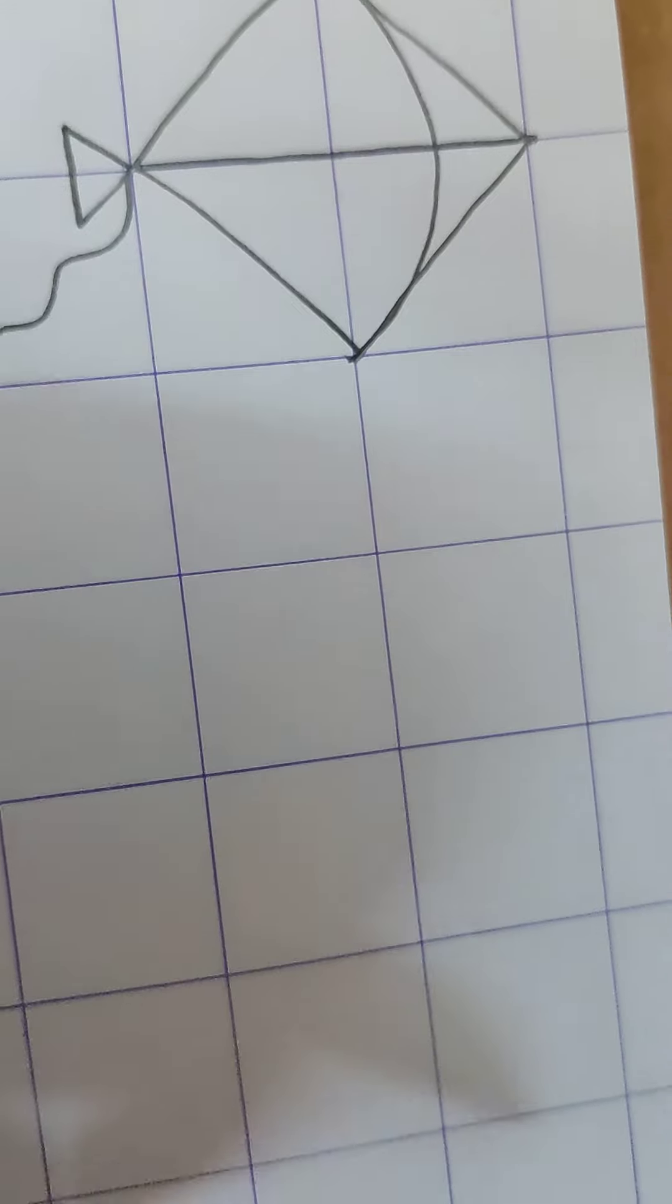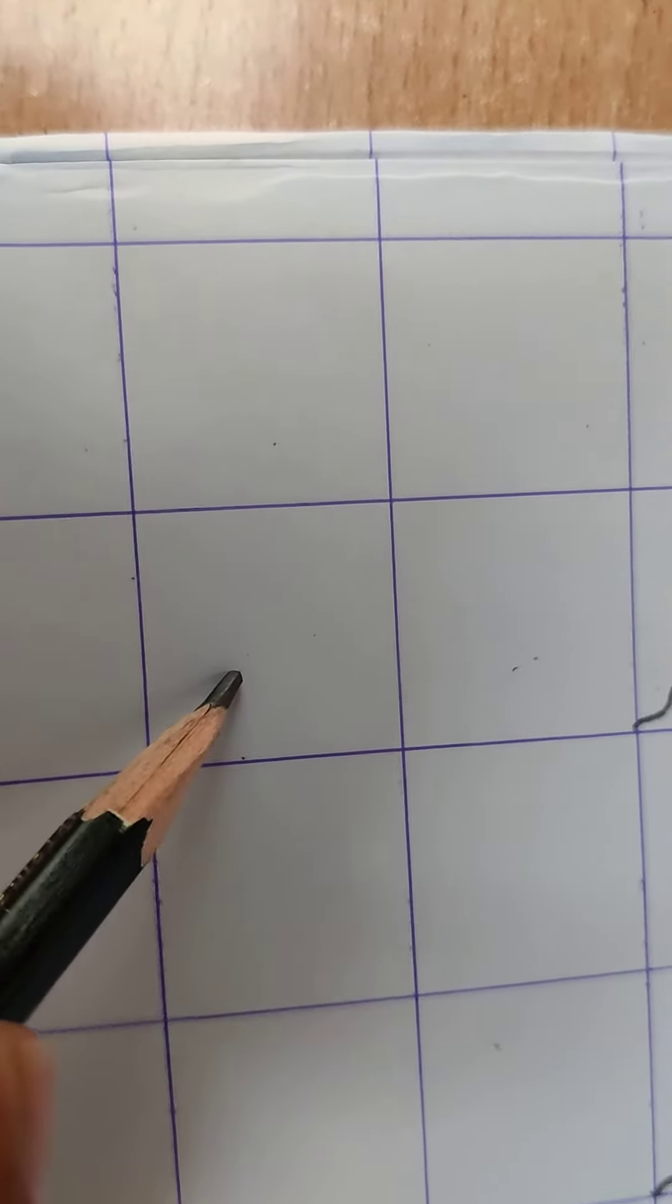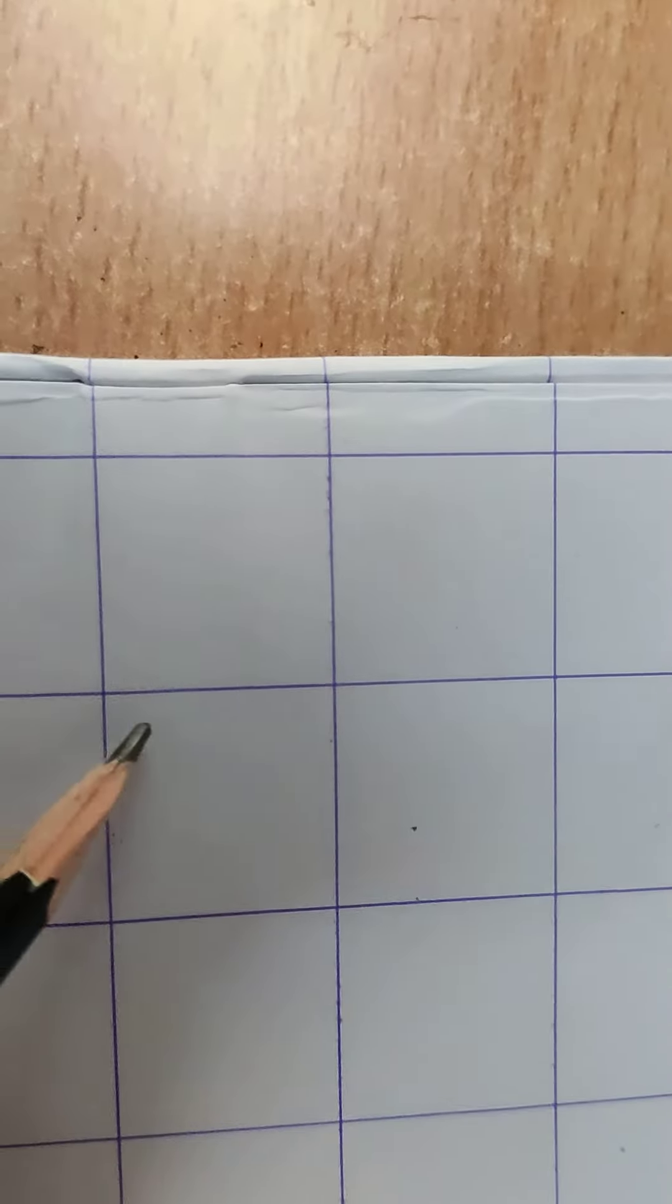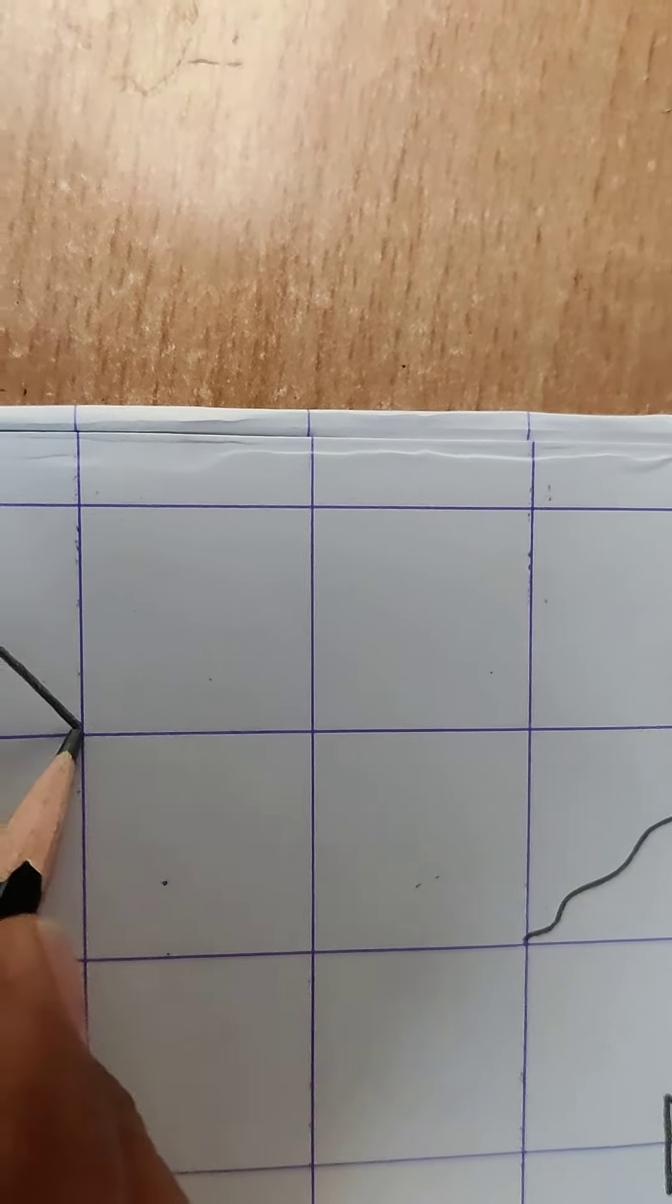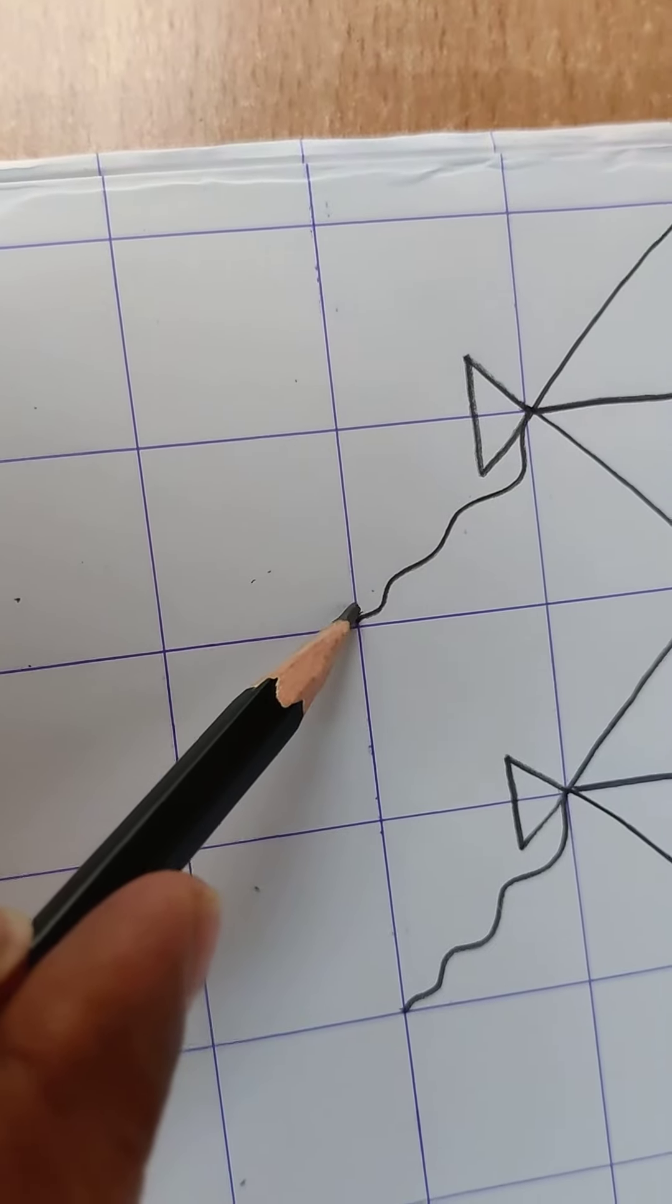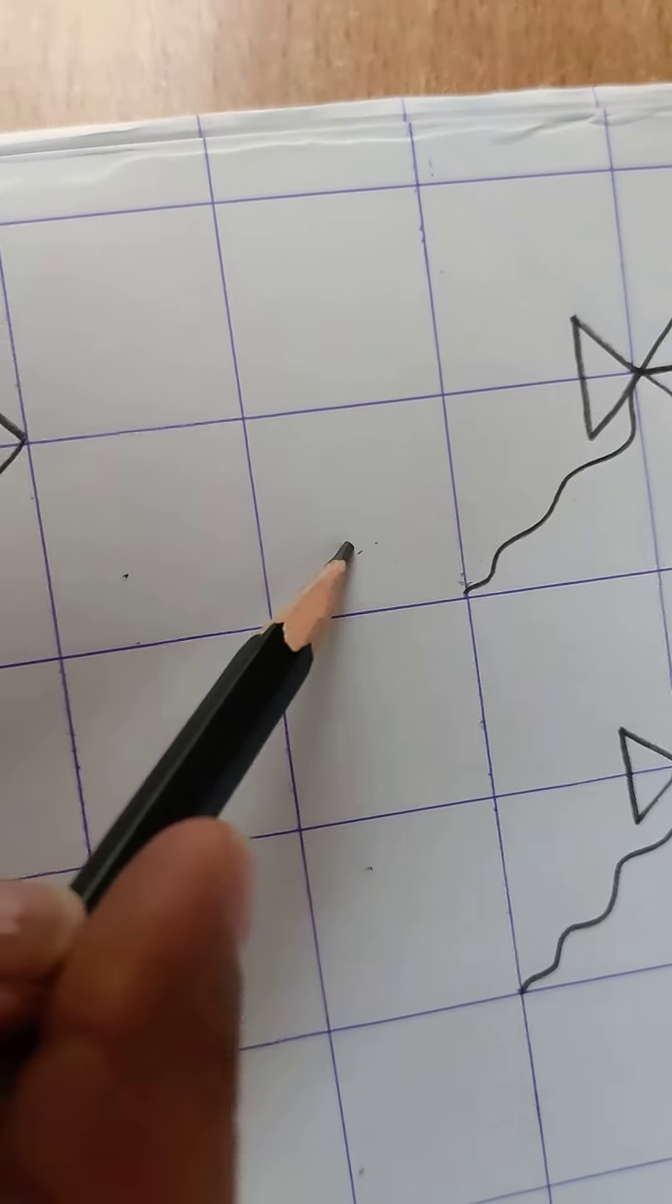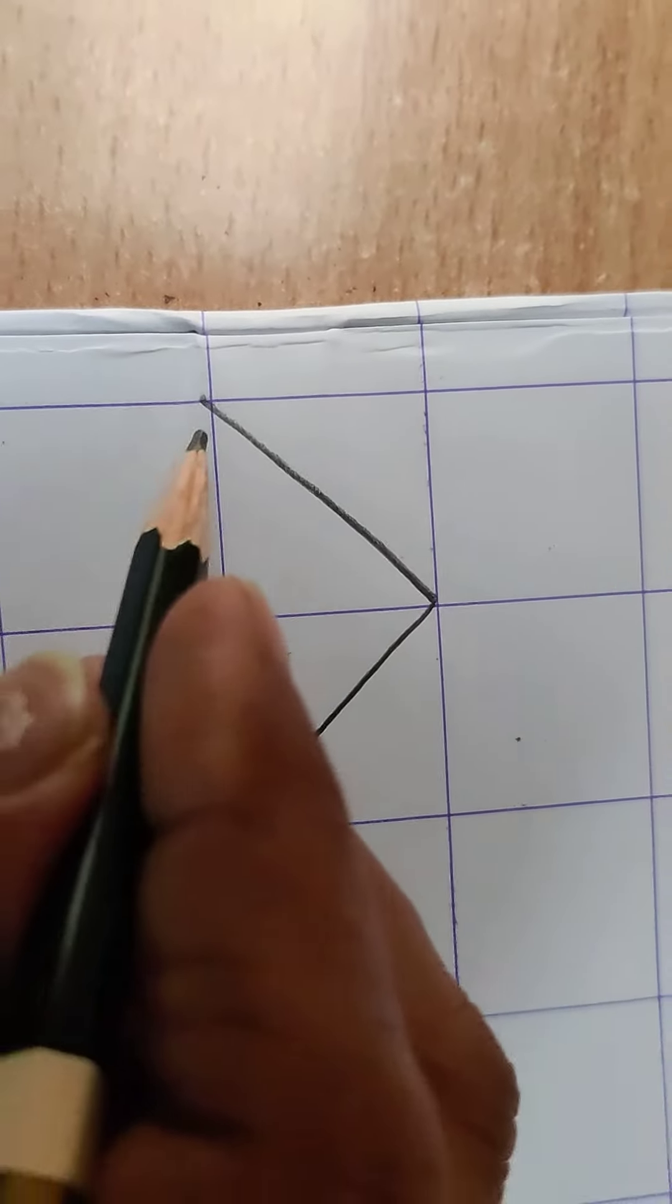After completing this full line you will leave two lines in between and then again you will draw here. Okay. You have to leave two lines. See after kite is finished till here till the string. After that you will leave one two and then you will start again making kites.